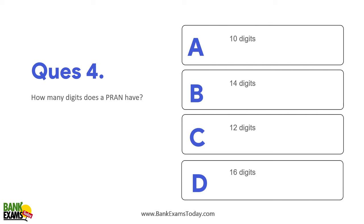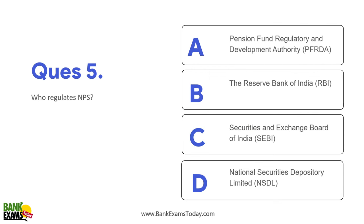How many digits are there in the PRAN? There are 12 digits in the PRAN number. It is a unique number, just like PRAN.